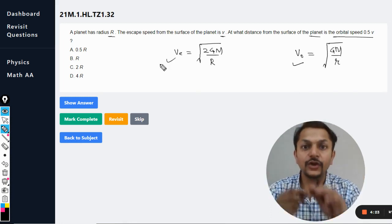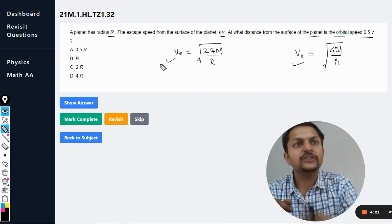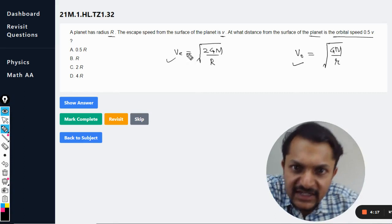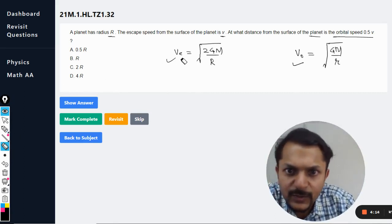The escape speed is the speed of the rocket which should be given to the rocket so that the rocket flies away and never comes back. This is given as v and we want to find the orbital speed.